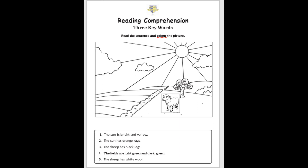Before we read the sentences, I want you to look at the picture. What can you see? What can you see in the picture? There is a sun. We can see the sun. Very good. What do you think? What is the color of the sun? Is it orange? Is it green or yellow? Yes, it's yellow. Very good. What else can you see in the picture? Someone said a tree. Very good. A tree. We can see the tree. And what else? Yes, sheep. We can see the sheep.